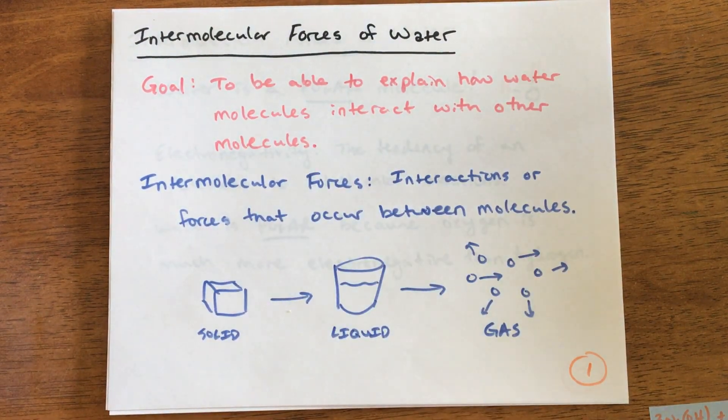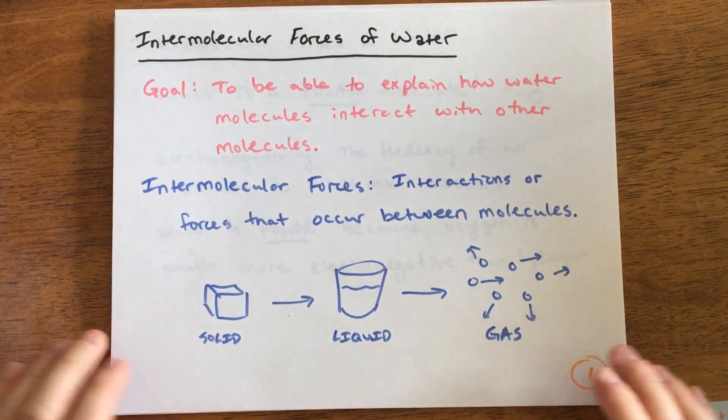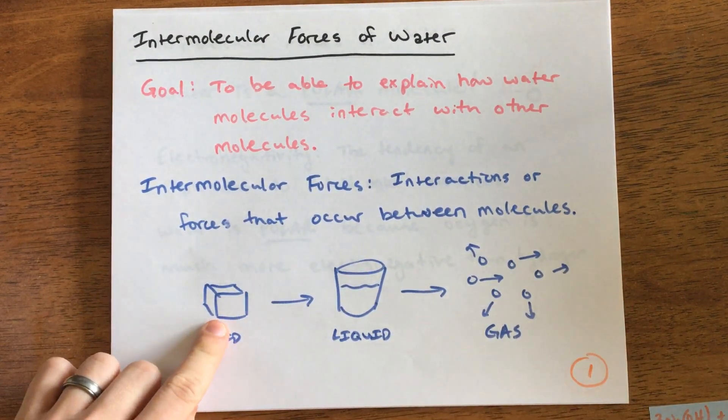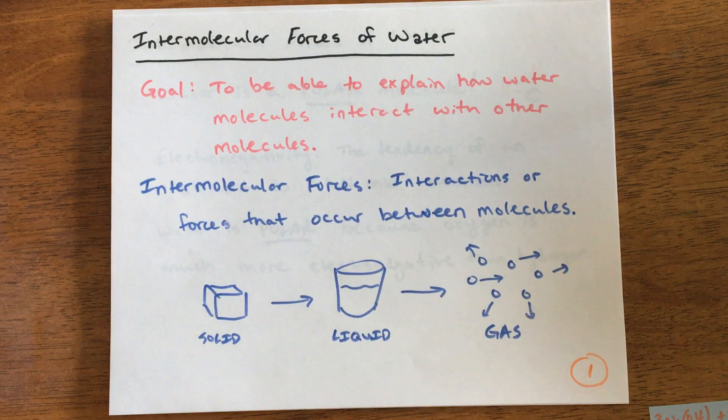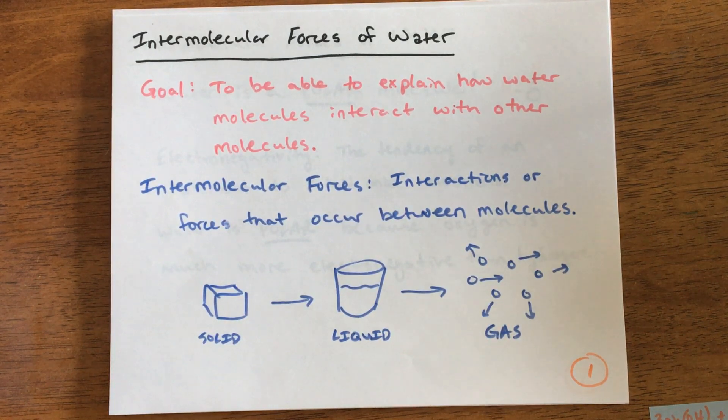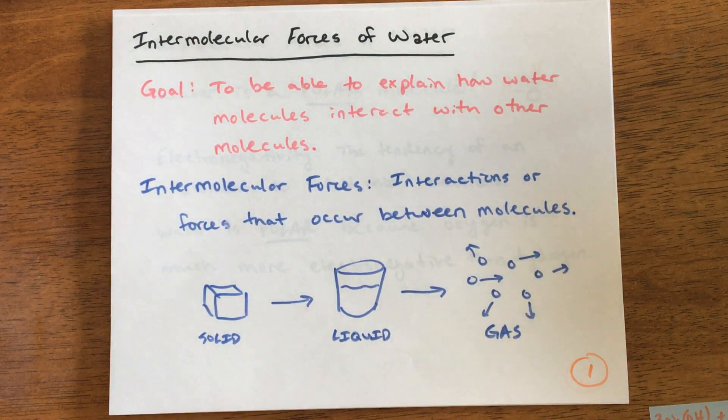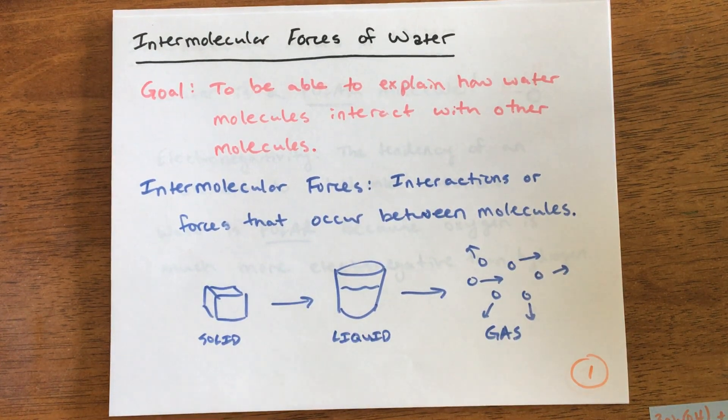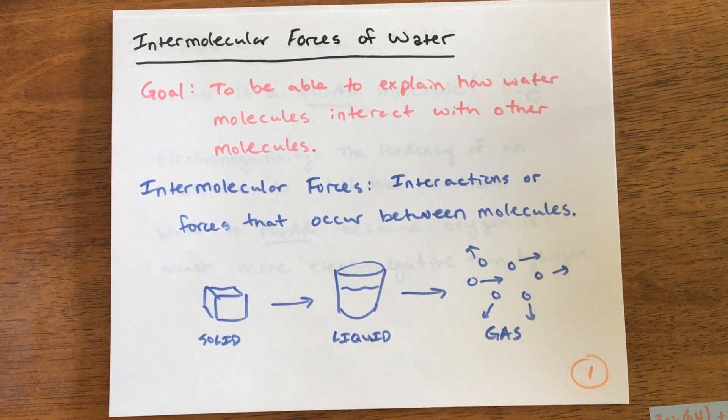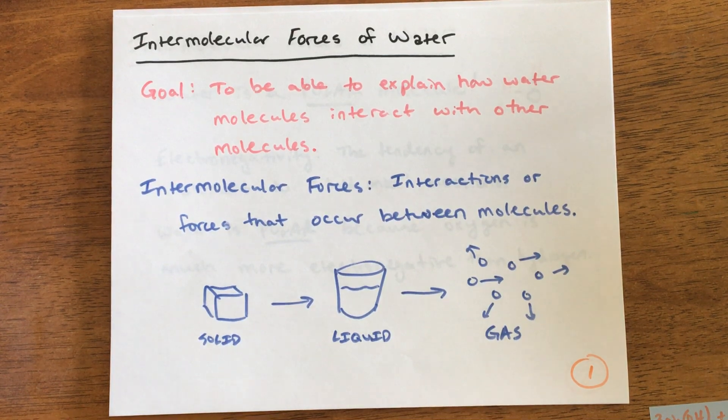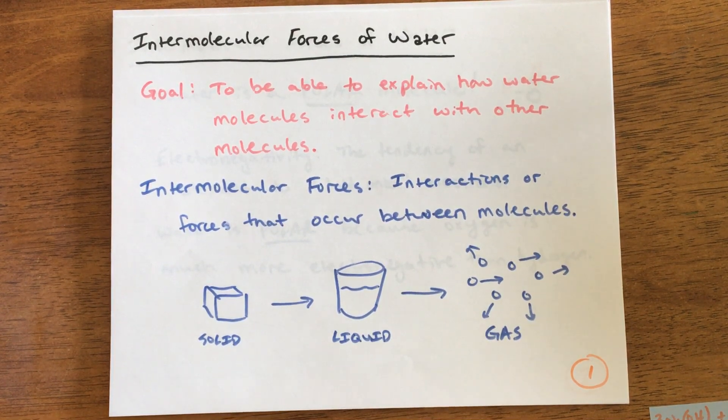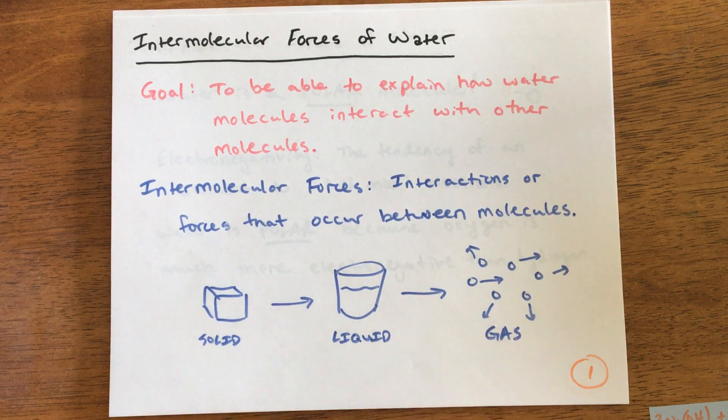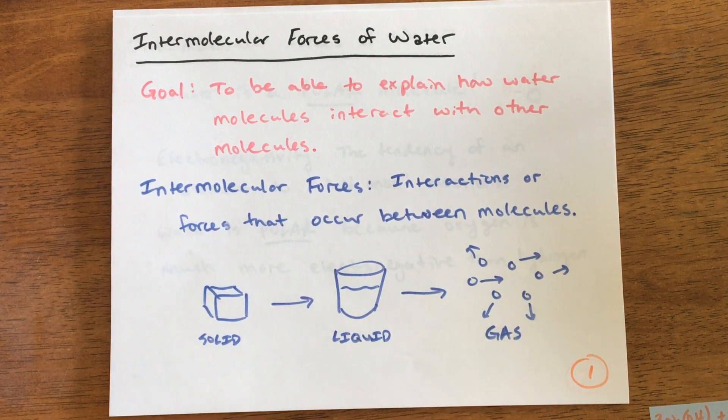Just as a quick example, in a solid there are really strong intermolecular forces. They're so strong that the atoms are being held in place—they're still moving a little bit but they're held in place for the most part. In a liquid, the intermolecular forces aren't quite as strong because the molecules can freely move, but they're still stuck in that same volume. In a gas, the intermolecular forces are pretty weak because the molecules are really far apart.